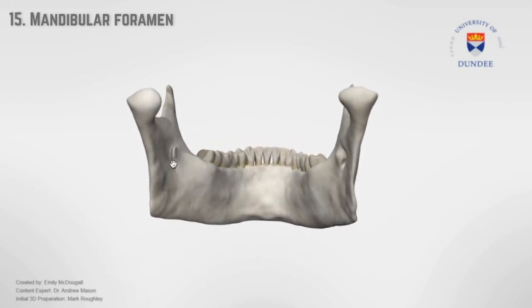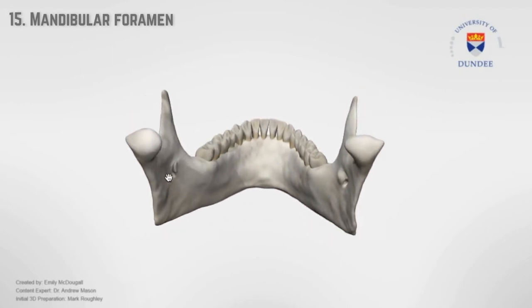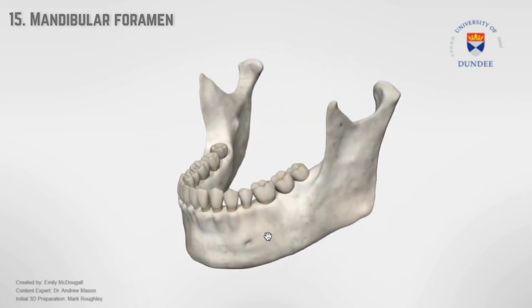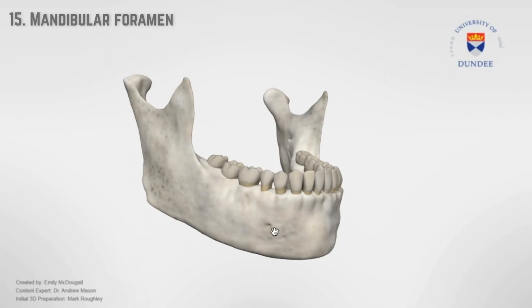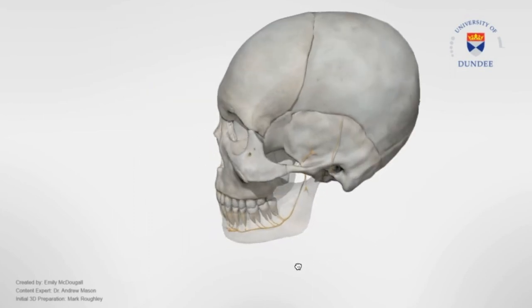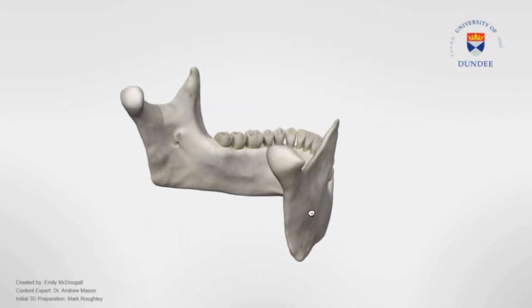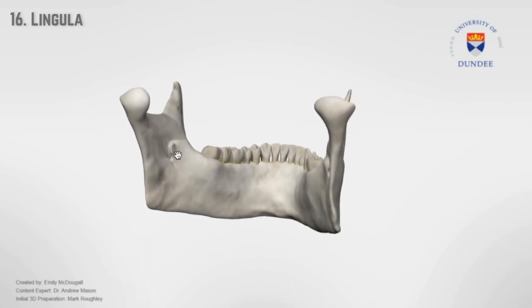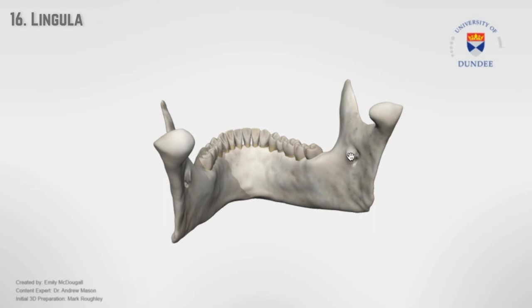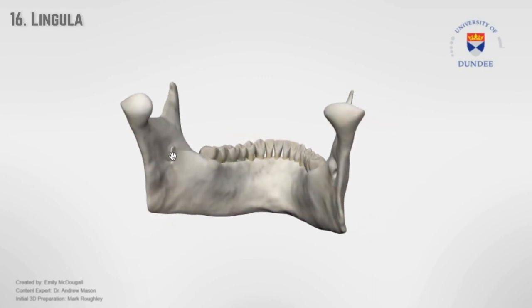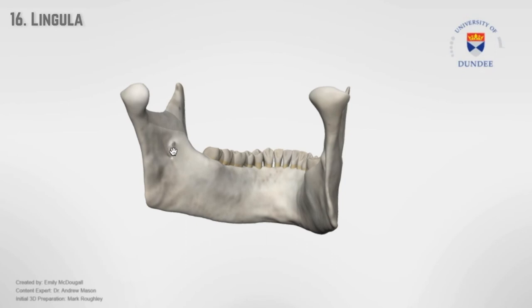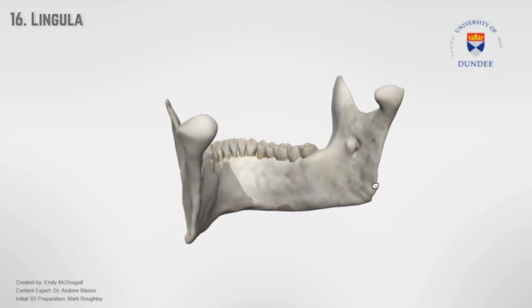Mandibular foramen — a small opening that leads to the mandibular canal, which travels obliquely downwards and forwards through the mandibular ramus to terminate as the mental foramen on the external surface of the mandibular body, and it contains the inferior alveolar nerve. Lingula is a triangular bony projection on the medial surface of the ascending ramus, immediately superior to the mandibular foramen, providing attachment for the sphenomandibular ligament.